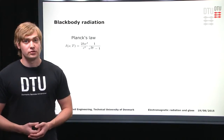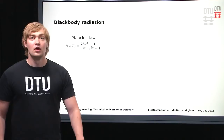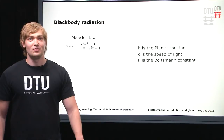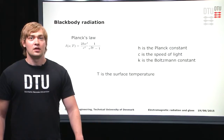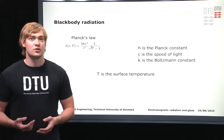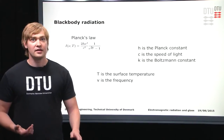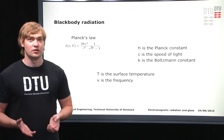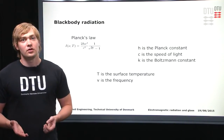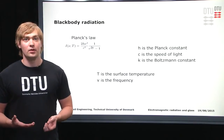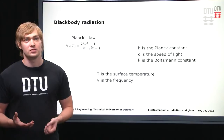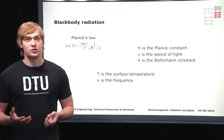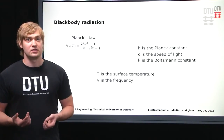Planck's law has three constants and two variables: the Planck constant, the speed of light, and Boltzmann's constant. It is then dependent on the surface temperature of the object and the frequency, and from this you can get the intensity of the radiation. The law doesn't contain anything about which type of material the object is made of — it's simply the surface temperature that determines how much and at which wavelengths it emits blackbody radiation.